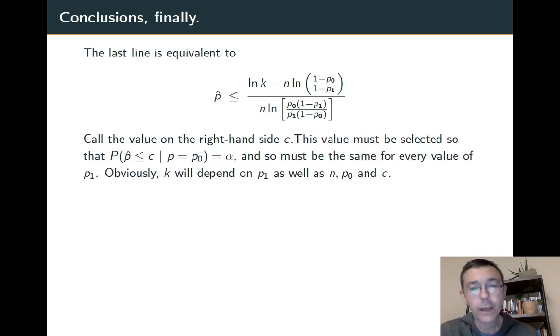However, the value on the right has to be selected so that the size of our critical region is α. We're talking about critical regions of size α and so that's just a requirement. So really this right hand side c is not going to depend on, in particular, p₁. k will. So as p₁ changes, k is where the change will occur. The overall right hand side is going to stay exactly the same.